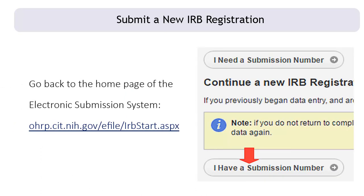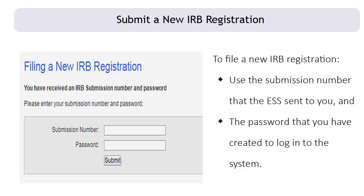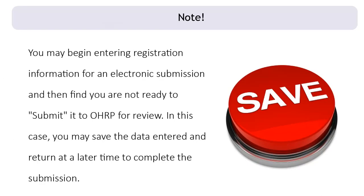Go back to the home page of the electronic submission system at ohrp.cit.nih.gov/efile/irbstart.aspx. Please be sure to select 'New IRB,' then scroll down to the bottom of the webpage and select 'I have a submission number.' To file a new IRB registration, log in using the submission number that the electronic submission system sent to you and the password that you created. You may save the data entered and return at a later time to complete the submission if you are not ready to submit to OHRP.